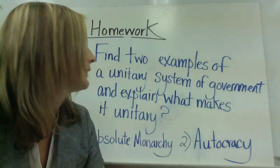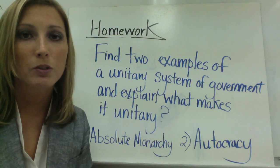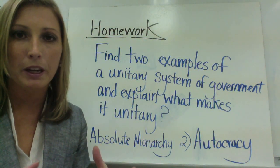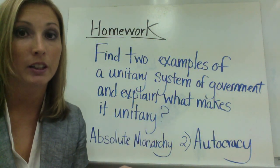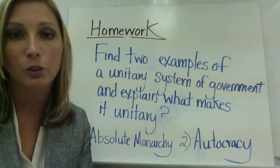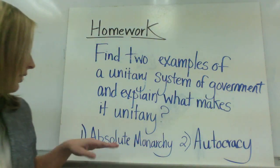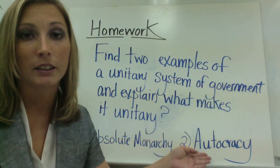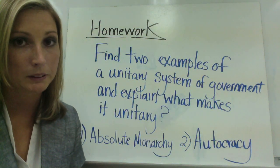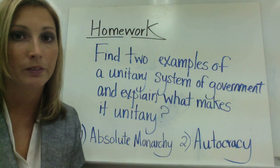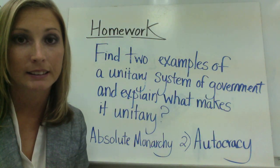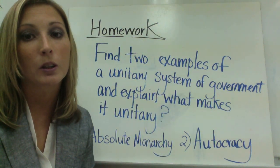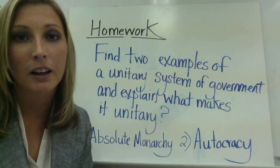For homework, find two examples of a unitary system of government and explain what makes those two countries unitary. The two types of unitary government I'd like you to find are an absolute monarchy and an autocracy. Please refrain from using the examples already listed — the United Kingdom or Cuba. We will discuss this when you come into class, and there will be an activity to deepen your understanding of a unitary system.